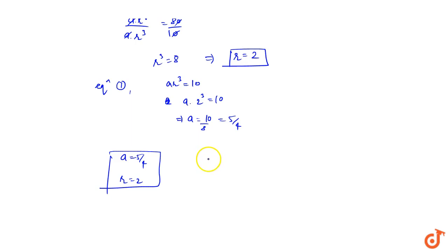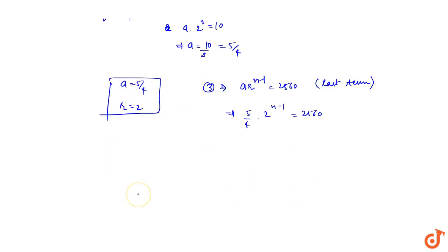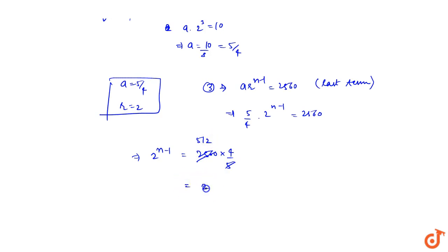Now putting these values into equation 3, which was a times r to the power n minus 1 equals 2560. This implies 5 by 4 times 2 to the power n minus 1 equals 2560. So 2 to the power n minus 1 equals 2560 times 4 by 5, which equals 2048.